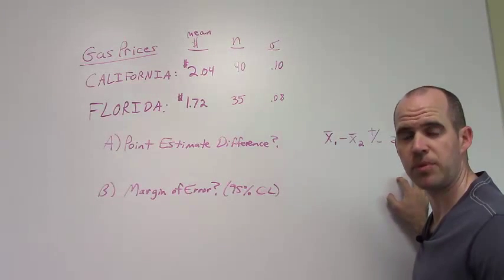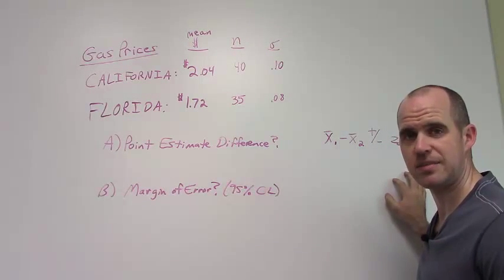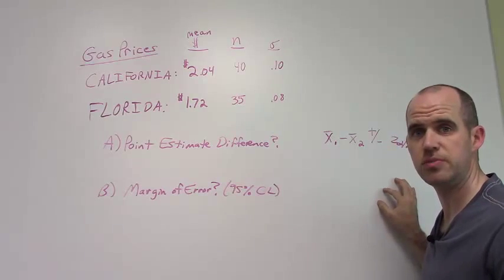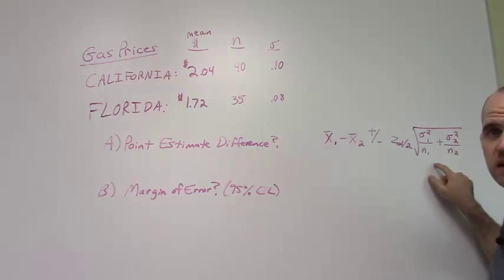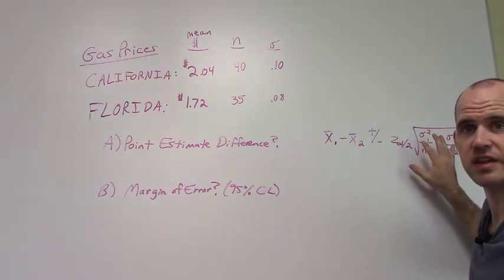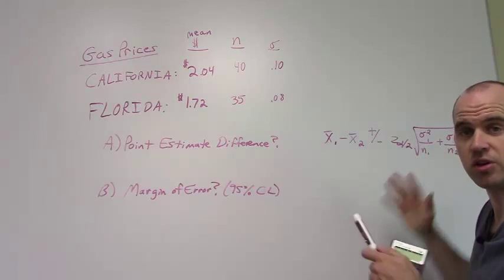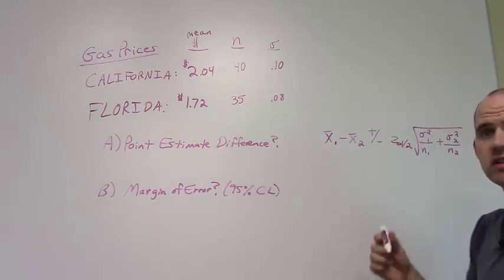This is the basic formula for an interval estimate when there's a difference between two means. Now, it looks pretty much the same. The major difference is right here. We have a much different standard error than what we are used to otherwise. So let's go ahead and solve for this.